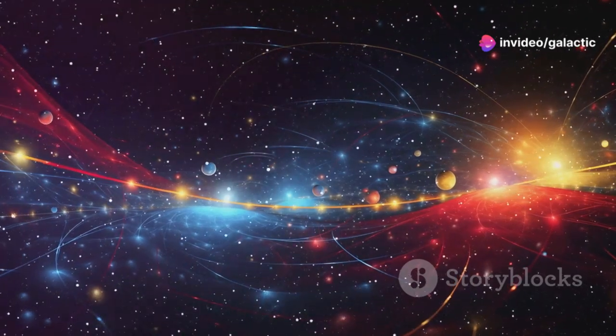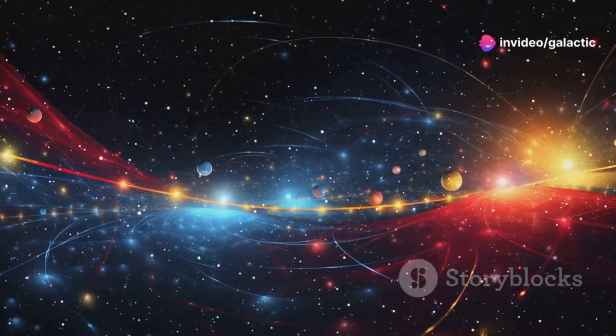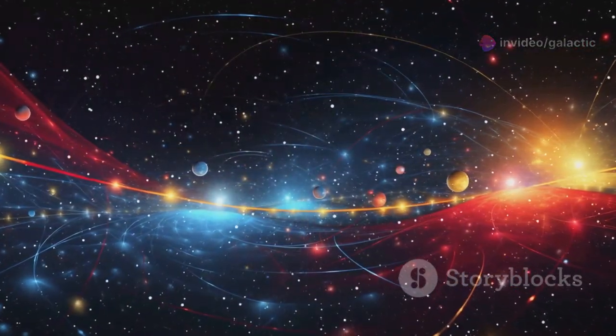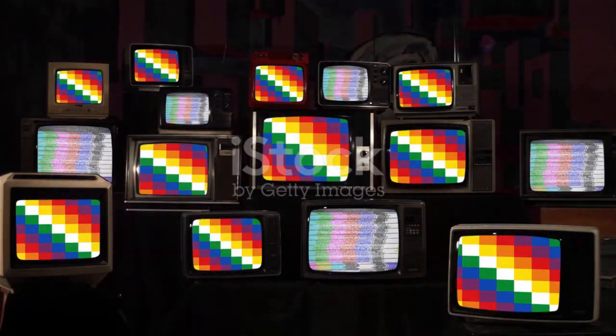In this experiment, light is shown through two closely spaced slits, creating a scenario that seems simple but reveals profound truths. Instead of creating two distinct bands of light on a screen behind the slits, a pattern of alternating bright and dark fringes emerges.